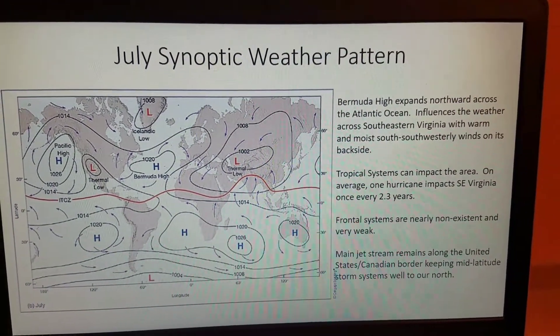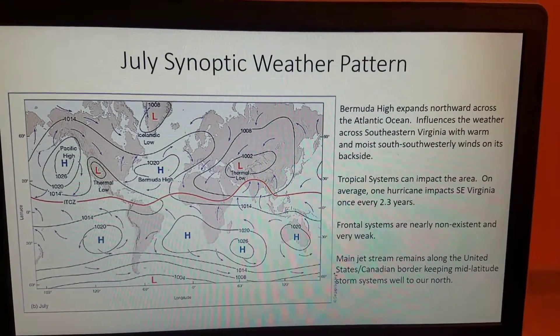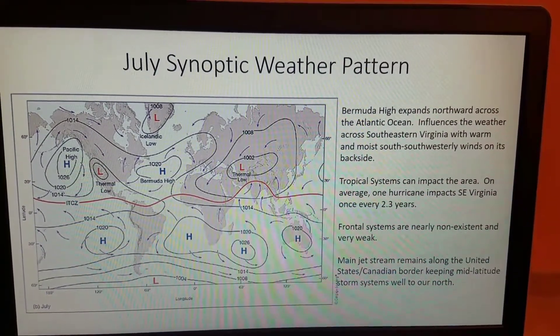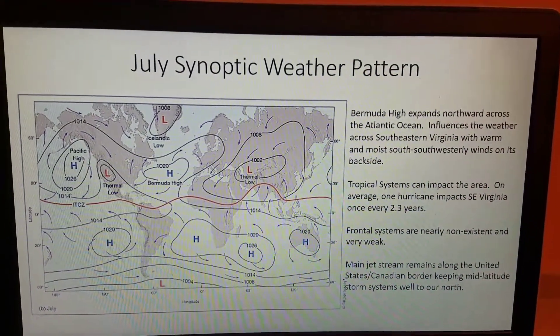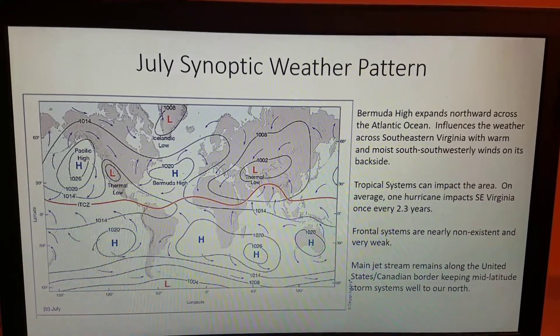And then tropical systems, yes they can impact the area and on average we have one hurricane which impacts southeastern Virginia basically one every 2.3 years.